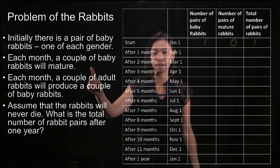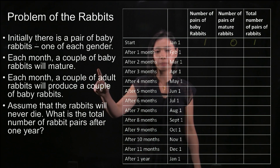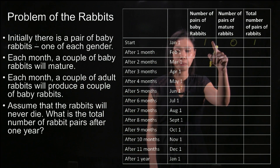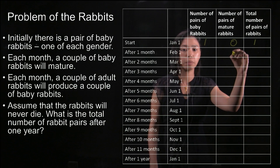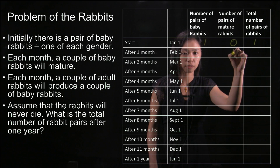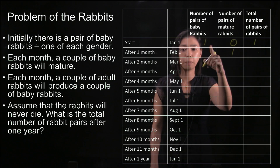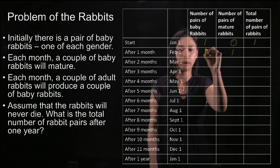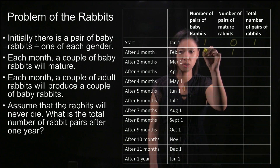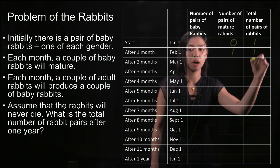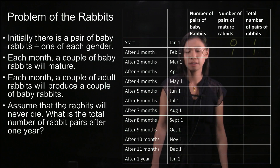In each month, a couple of baby rabbits will mature. This baby rabbit will mature in the next month, and there will be no more baby rabbits because they matured. In total, we have one pair of rabbits after month one.